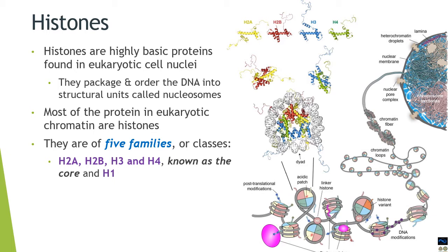H1 is somewhat different from the core histones. The core histones H2A, H2B, H3, and H4 are usually small proteins with masses varying from 10 to 20 kilodaltons.